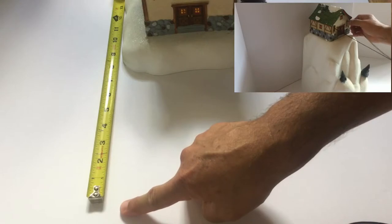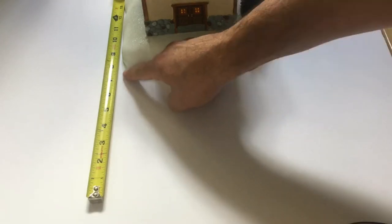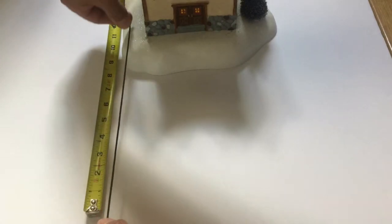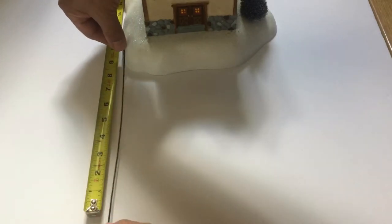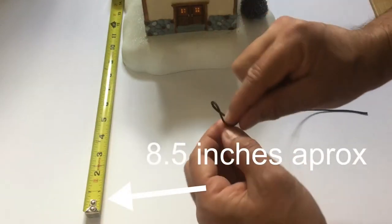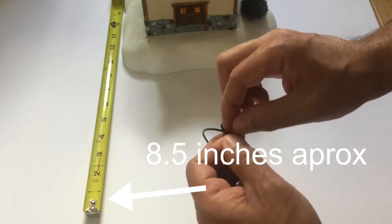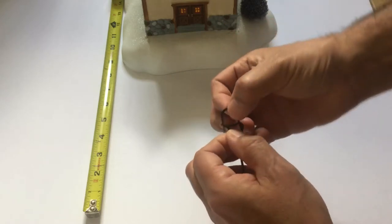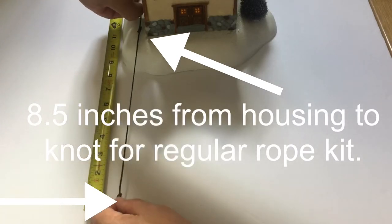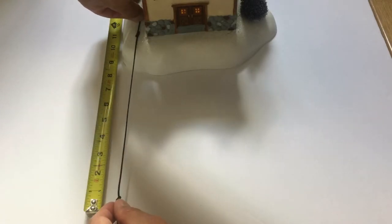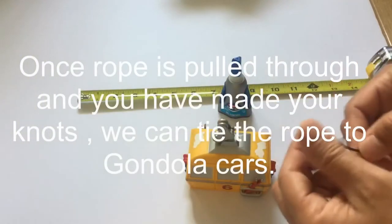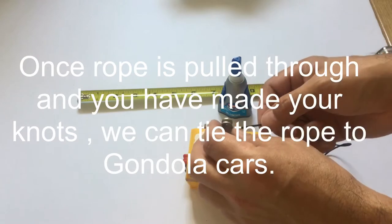Now, from the edge of the gondola to the edge of the building, it's approximately 8.5 inches. So that's 8.5 inches from the knot to the building. That's the proper distance. From the knot to the gondola car, it's another 8.5 inches.